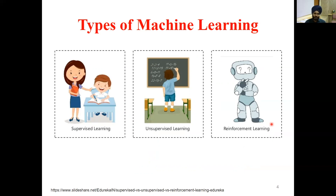If you see the first picture — supervised learning — the student is able to learn certain things and a teacher is there to guide that student. As the name suggests, in supervised learning there is a supervisor or teacher to guide us whenever we are trying to make a mistake. While in the second picture — unsupervised learning — the student itself is trying to learn things, and we do not see any teacher around. So in this kind of learning, we try to learn without the help of a teacher.